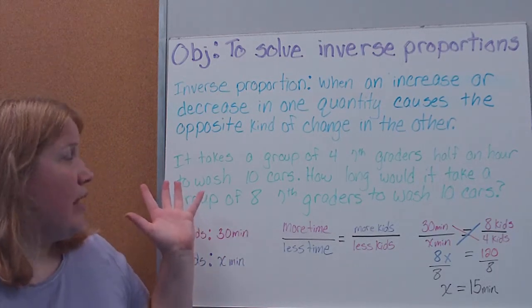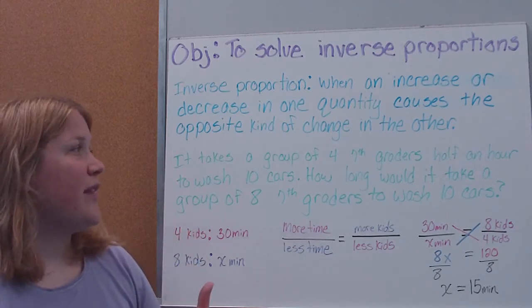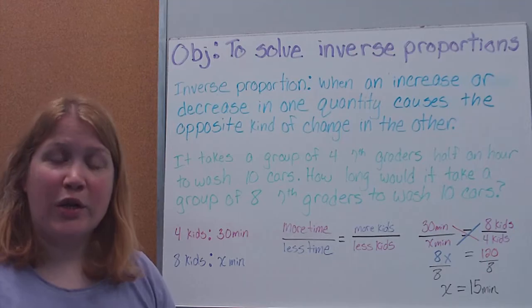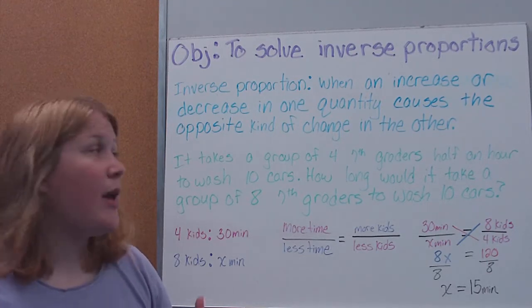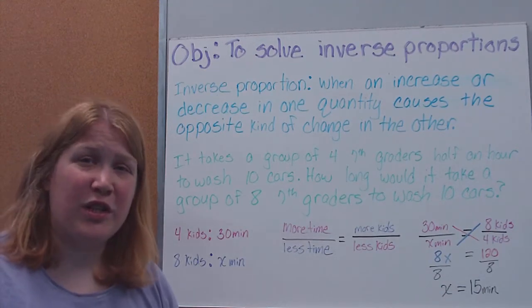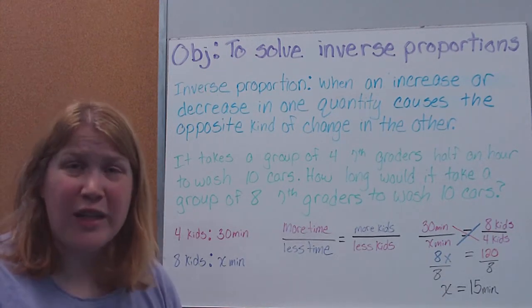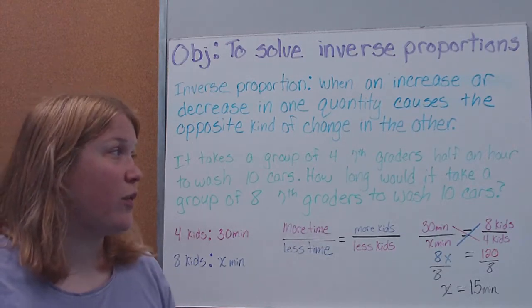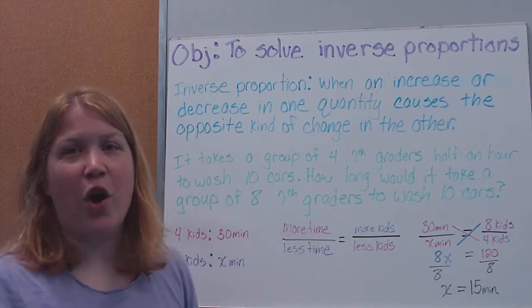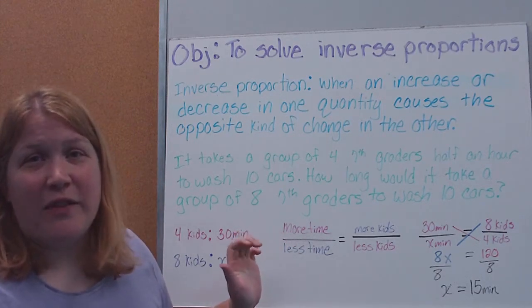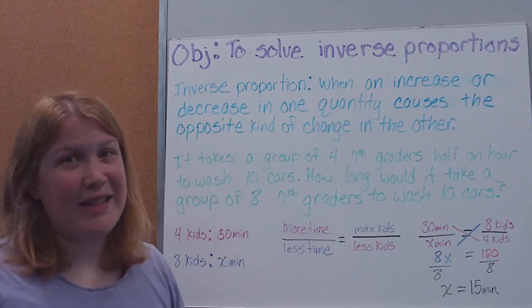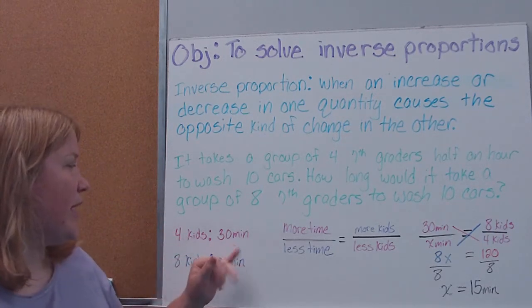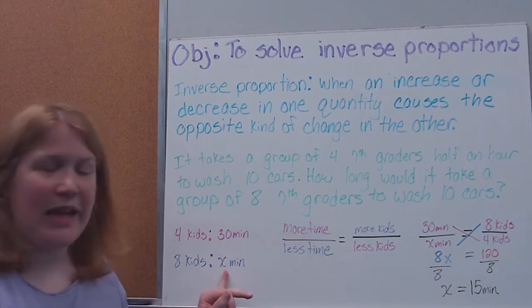So, for example, here's a problem that I've given you. It takes a group of four 7th graders half an hour to wash 10 cars. So, how long would it take a group of eight 7th graders to wash 10 cars? So, in a direct proportion, you would know how to set it up. However, if you think about this one logically, I have more children. Should it take them more time? No. I have more kids working, so it should take them less time.